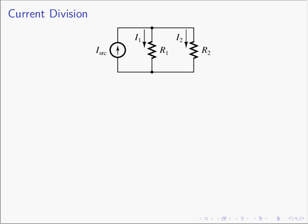Current division is the situation when you have a current — in this case we'll have a simple example — a current source which flows to the right. When that current gets to this node, the current will divide. Some of the current will flow through the R1 resistor and some will flow through the R2 resistor, so there's a current I1 and I2, which is the source current divided. That's where the name comes from — it's a situation where a current is being divided among two parallel paths.